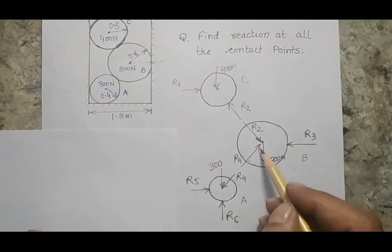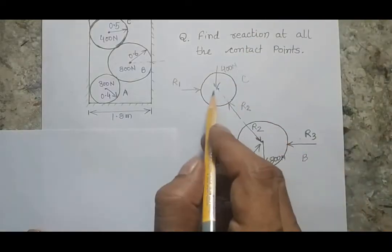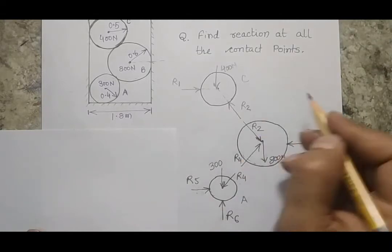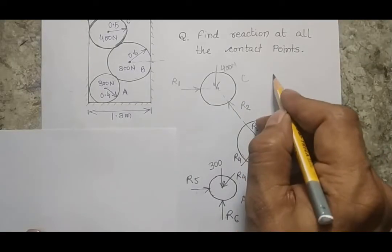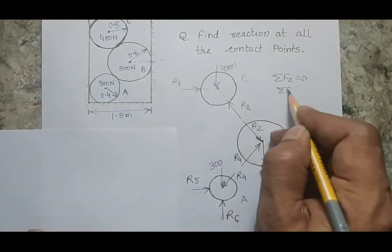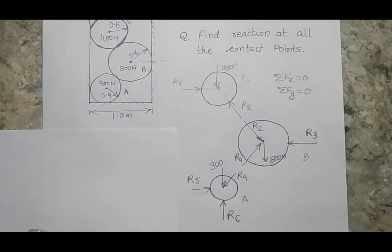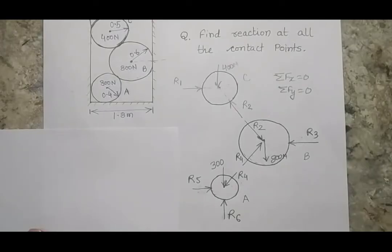Once you have the free body diagrams, you can see this is a system of concurrent forces — all forces pass through a single point. We have three free body diagrams and can write two equilibrium equations for each: horizontal force balance equals zero and vertical force balance equals zero. That gives us six equations total, and we have exactly six unknowns — R1 through R6 — so we can solve.